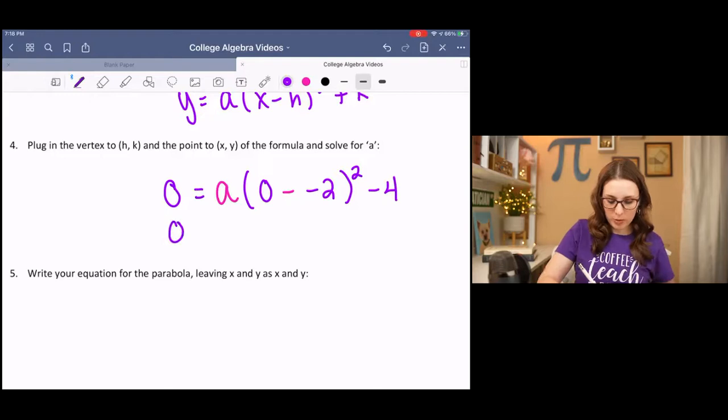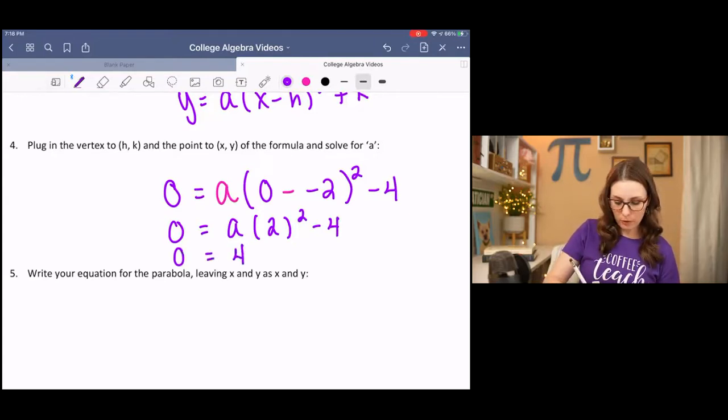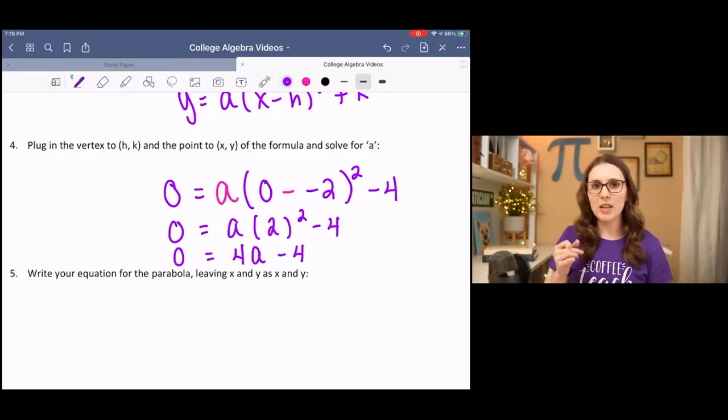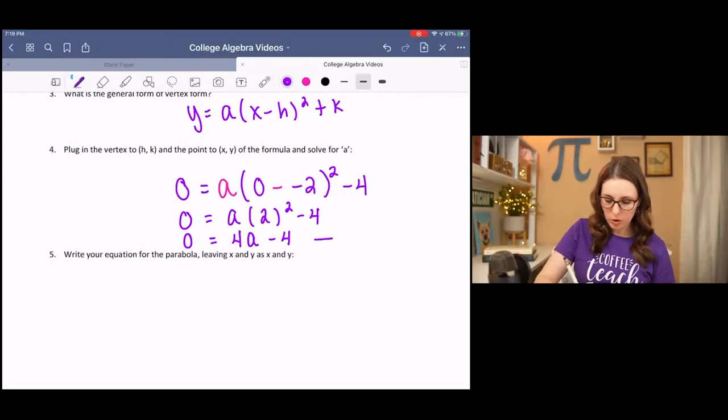We will simplify what's inside the parentheses. And then 2 squared is 4. I'm going to write it in front of the a instead of behind it. It really doesn't matter the order, but 4a is a little more common than a4. Then we are going to solve for a by adding 4 and dividing by 4.